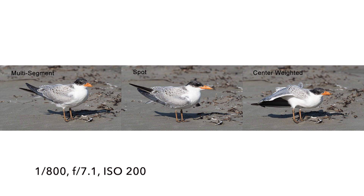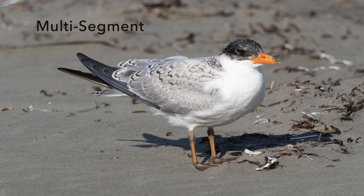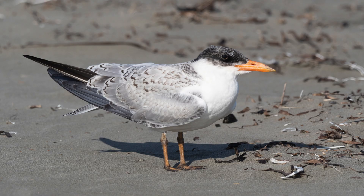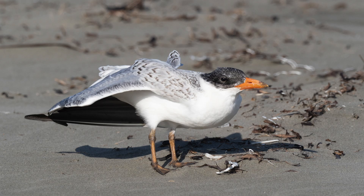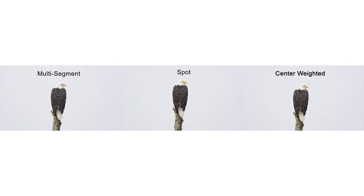I'm back in the office now and all the images I'm going to show you are raw images — no post-processing except cropping to fit the 16:9 aspect ratio of the video. With the Caspian tern images, the background looks the same in all of them. The center weighted one looks a little bit brighter, but I don't see much difference. The multi-segment metering looks pretty normal with the chest a little bright white. The spot metering one is pretty much the same. Overall I can't tell that much difference between these three.